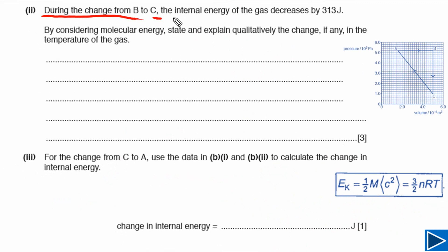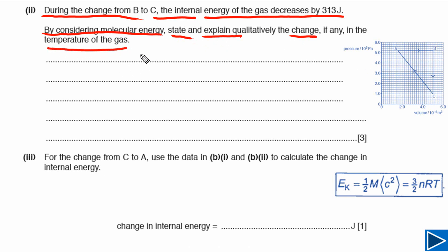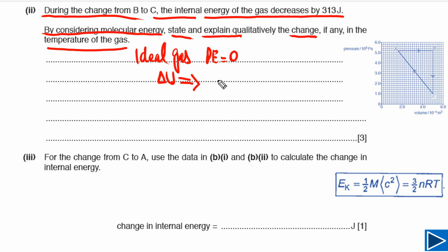For this part it is given that during the change from B to C the internal energy of the gas decreases by this amount. We need to consider the energy of molecules and state and explain the change, if any, in the temperature of the gas. For an ideal gas, the potential energy of molecules is equal to zero. Therefore, the internal energy of the gas depends solely on the kinetic energy of molecules.